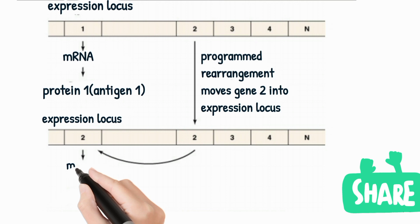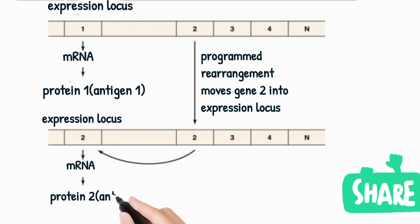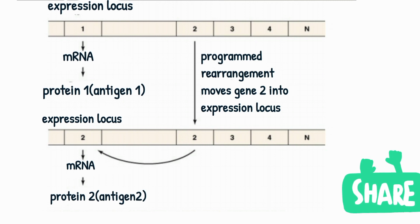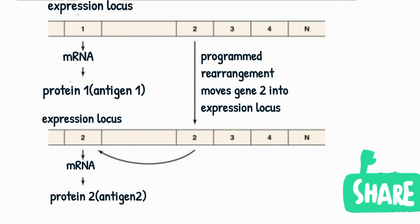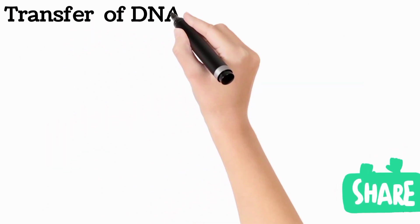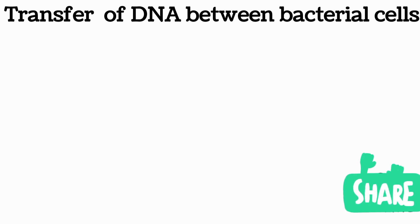The expression locus is the active site where transcription and translation occur again. This is how transfer of a gene occurs from the inactive site to the active site — this is programmed rearrangement. It helps give bacteria the ability to synthesize new proteins. For example, this is the process whereby Neisseria gonorrhoeae acquires different antigenic properties, helping it evade the immune system.